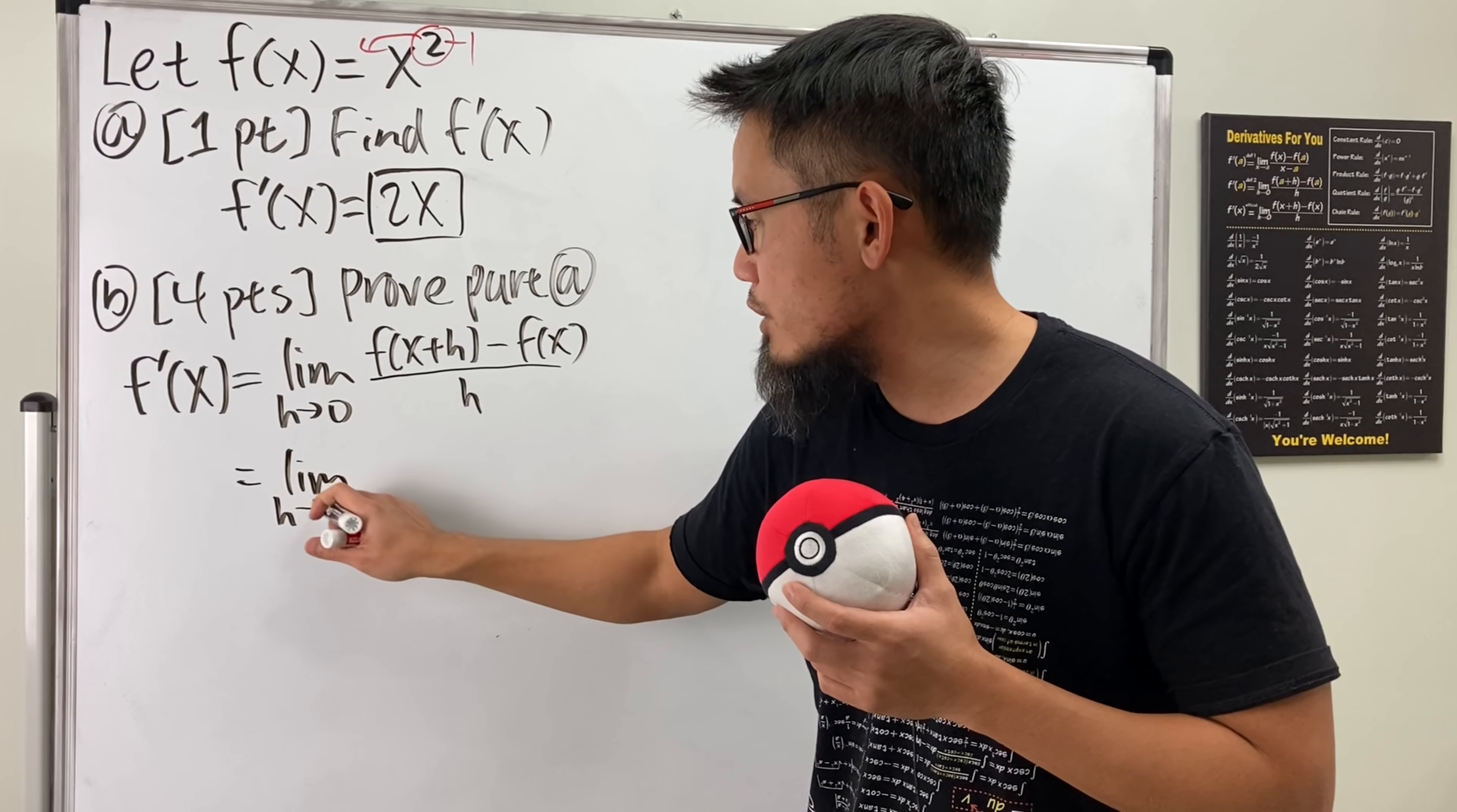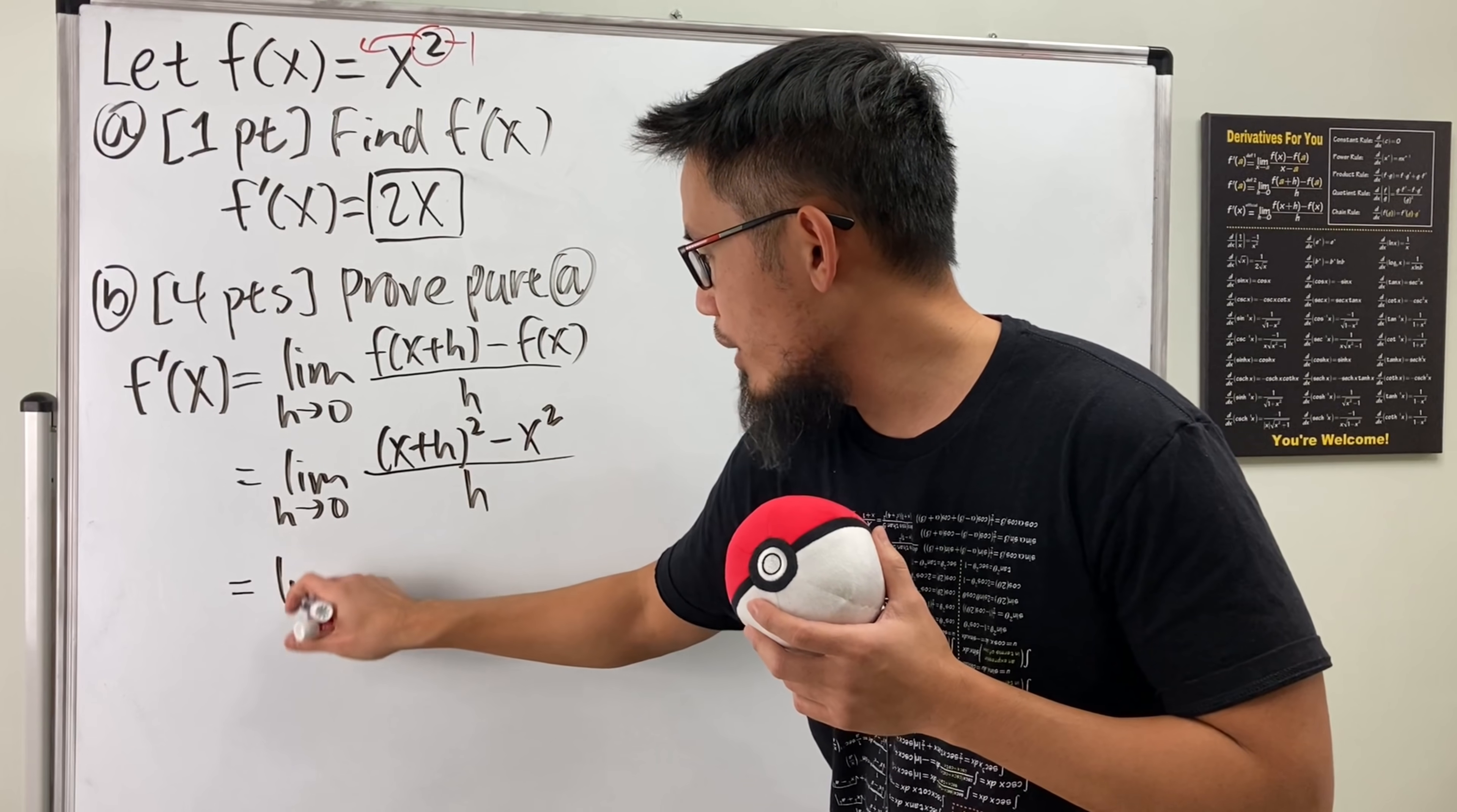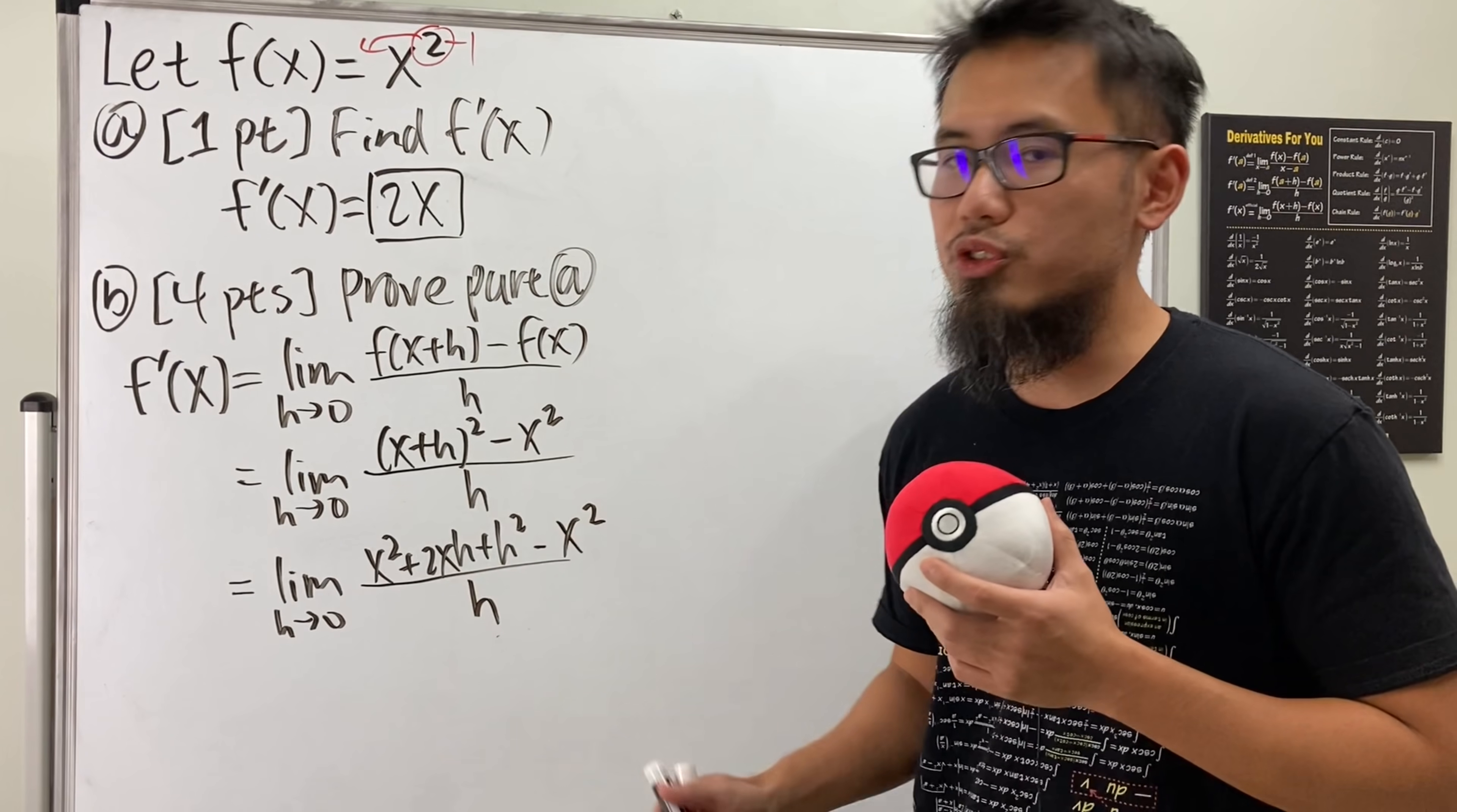Don't forget to write down the LIM, otherwise the teacher is going to take away a point or two or whatever. All right, put the x plus h inside. So we get (x+h)² minus the original function and divide it by h. And again, write down the LIM, h approaching 0. Open this. We get x² + 2xh + h² and then minus x² all over h.